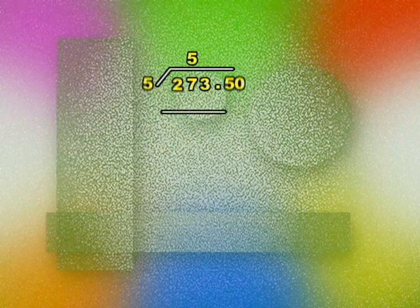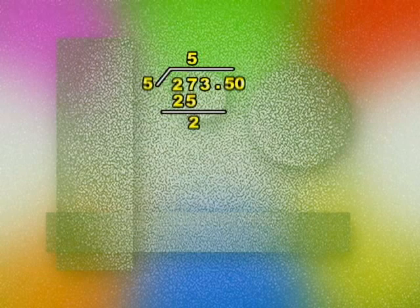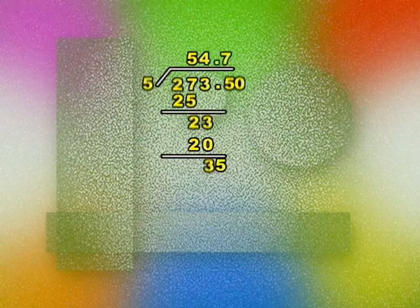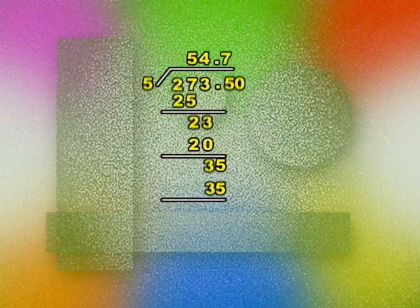Let's do it. Our problem is 273.50 divided by 5. 27 divided by 5 equals 5. 5 times 5 equals 25. 27 minus 25 equals 2. Bring down 3. 23 divided by 5 equals 4. 4 times 5 equals 20. 3 minus 0 equals 3. Bring down 5. 35 divided by 5 equals 7. 7 times 5 equals 35, and 35 minus 35 equals 0.